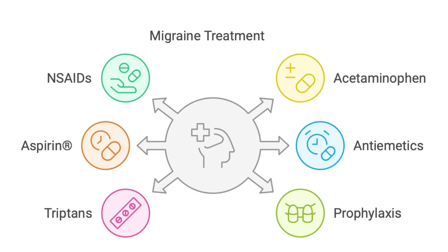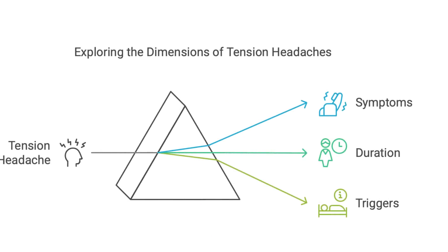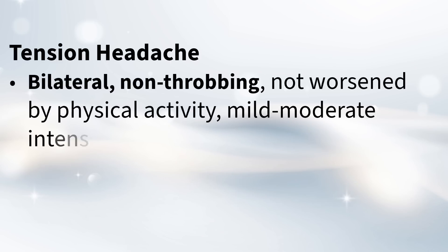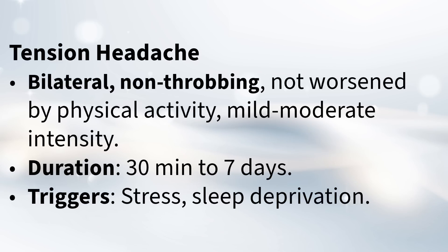Let's move on to another common one that feels pretty different: the tension headache. Tension headaches are usually bilateral, so both sides of your head. The pain is usually not throbbing — more like a constant dull ache, kind of like a tight band or pressure around your head. Importantly, moving around doesn't usually make it worse, and the intensity is mild to moderate. It can last anywhere from about half an hour to a whole week.